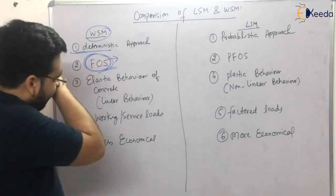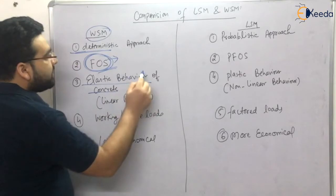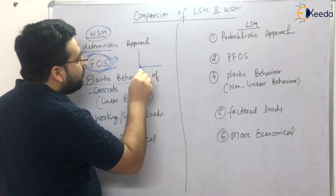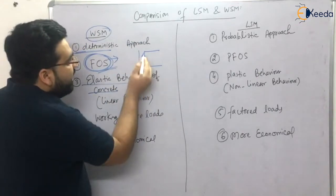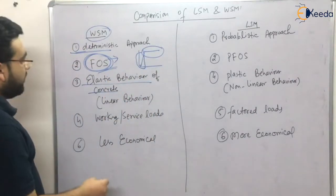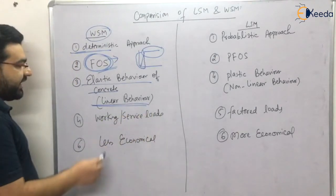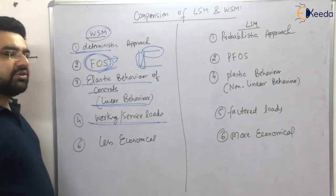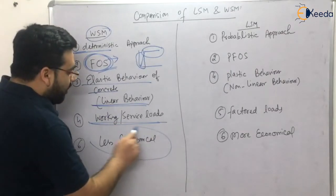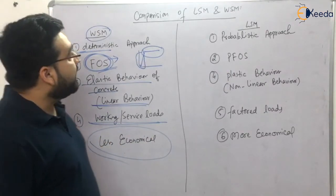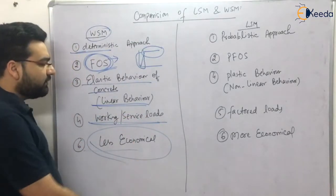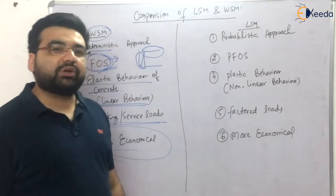It is an elastic behavior of concrete. The stress-strength curve for concrete is actually nonlinear, but in the working stress method we imagine it as a straight line, and we are dealing only up to a certain location — we are not utilizing the full strength. That is linear behavior. The loads used are working or service loads. It is less economical because if you design any structure with the working stress method, you end up with thick walls and thick beams, since we are not utilizing the full strength of the structure.